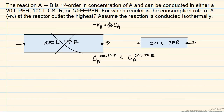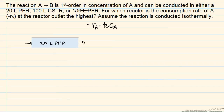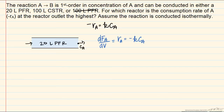Let's compare these two cases. Starting with the 20-liter PFR, we aren't given all the information about the plug flow reactor, so we'll write out the material balance for component A in order to solve for unknown quantities — in particular, the outlet concentration of the PFR. The mole balance is: the derivative of the molar flow rate of A with respect to volume equals the reaction rate of A, which equals negative K times C_A for this first-order reaction.